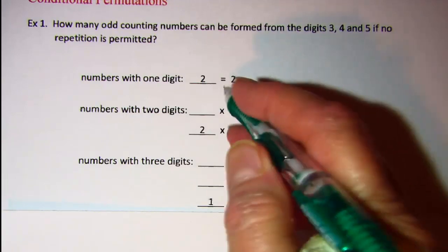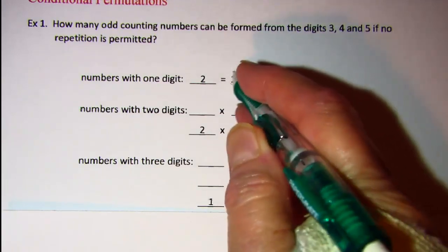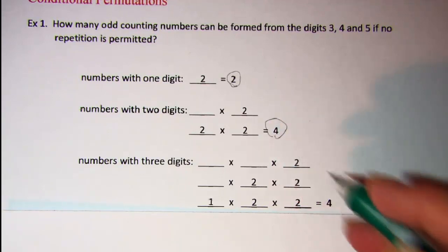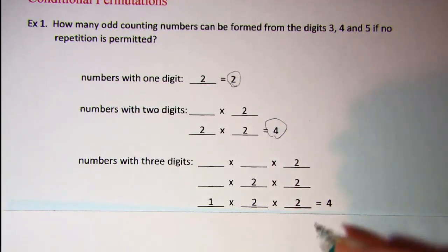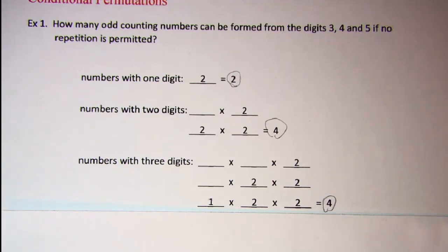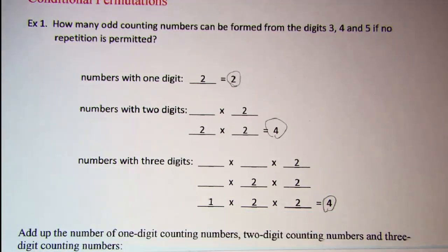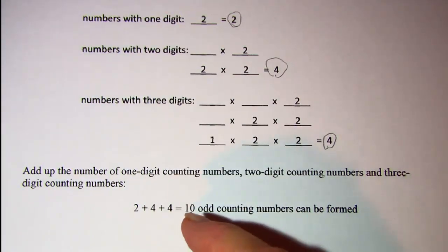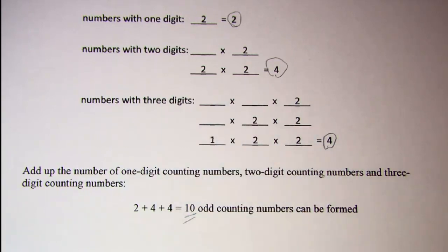Then to find how many odd counting numbers can be formed, I add these up. I have two one-digit, four ways to pick two digit counting numbers, and four ways to pick three digit counting numbers. So the total if we add those up is ten odd counting numbers can be formed.